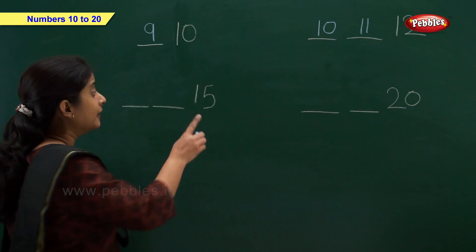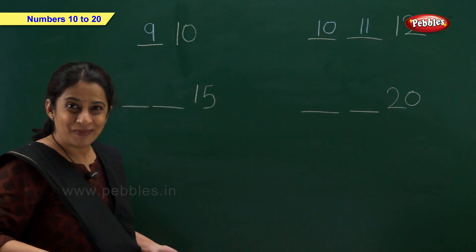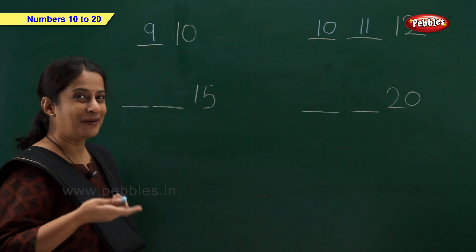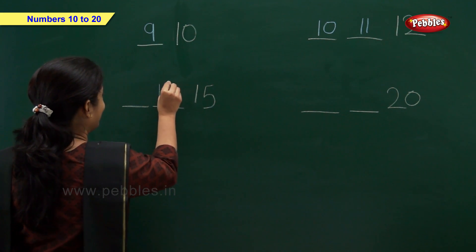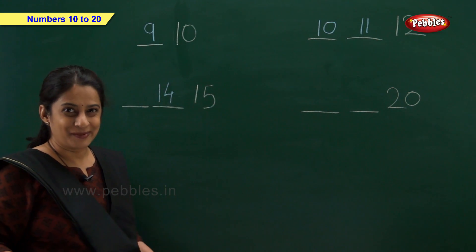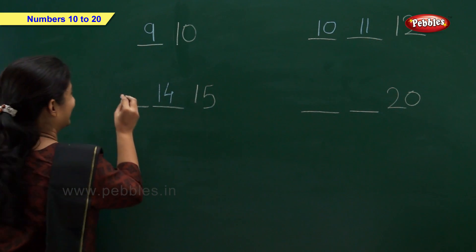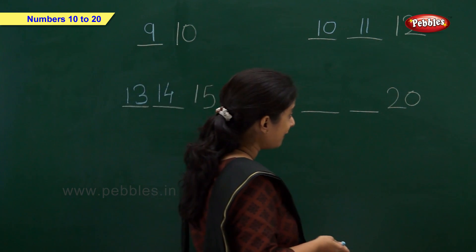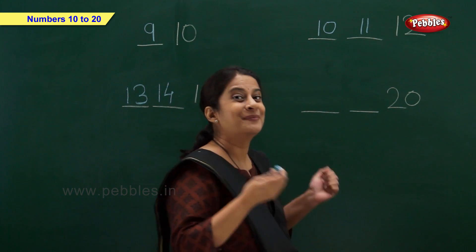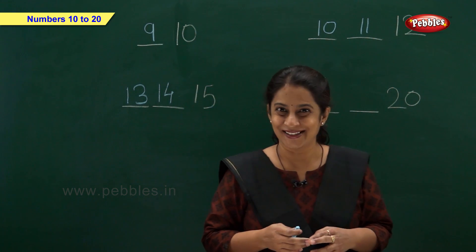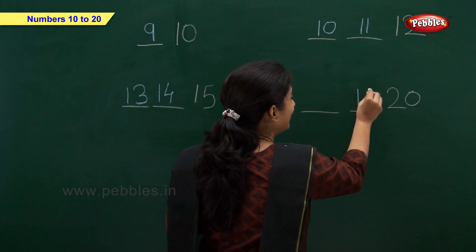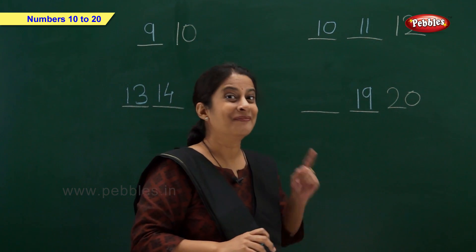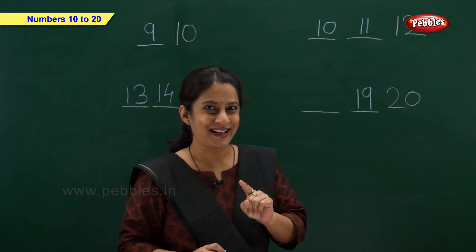Now we have number 15 — so which 2 numbers come before 15? Write: which number comes before 15? Number 14. And which number comes before 14? Excellent — number 13! And here we have number 20 — which number comes before 20? Write number 19. And which number comes before 19? Number 18!